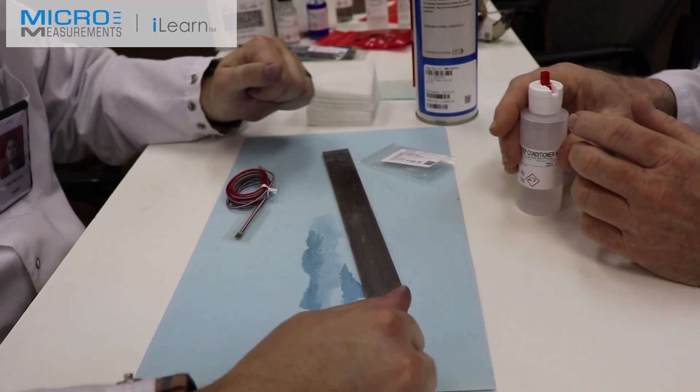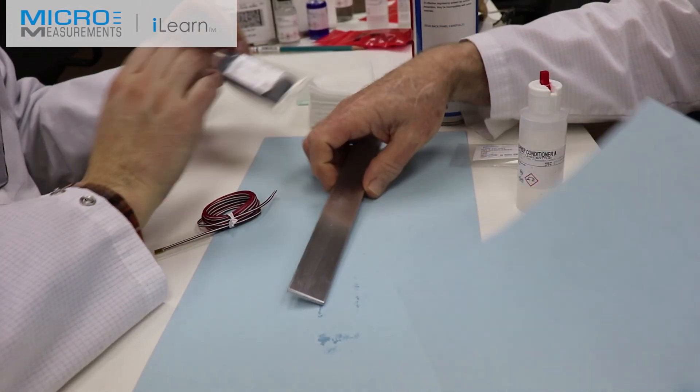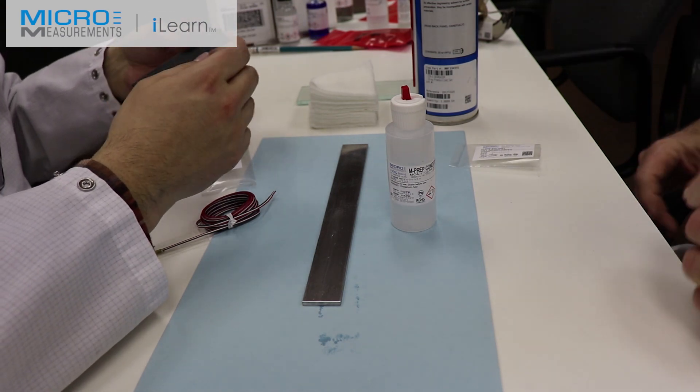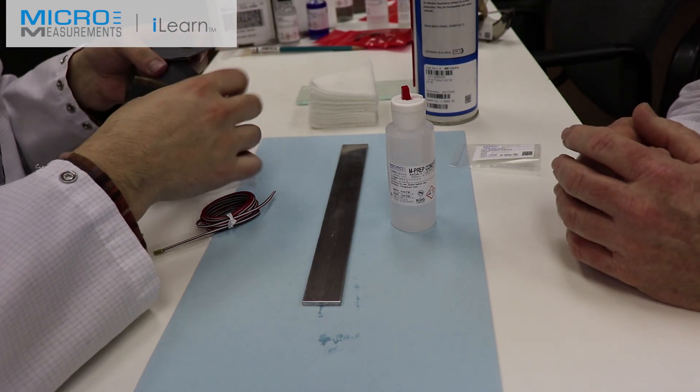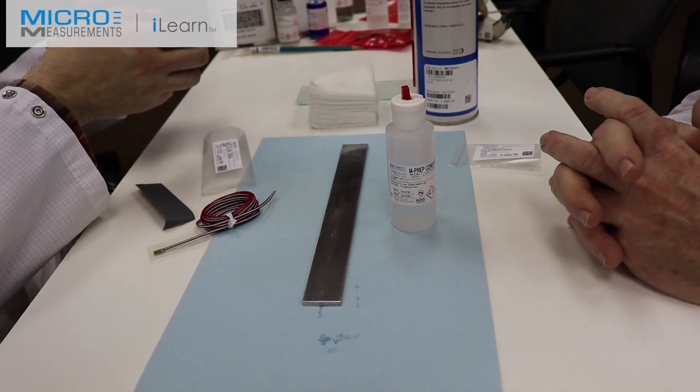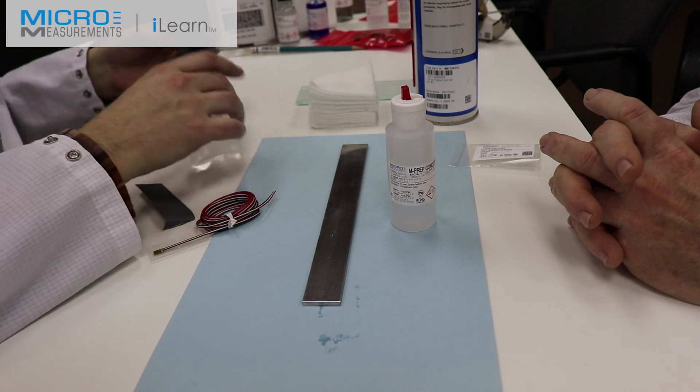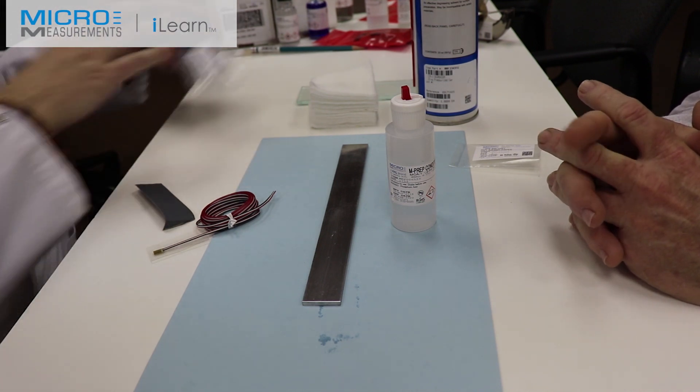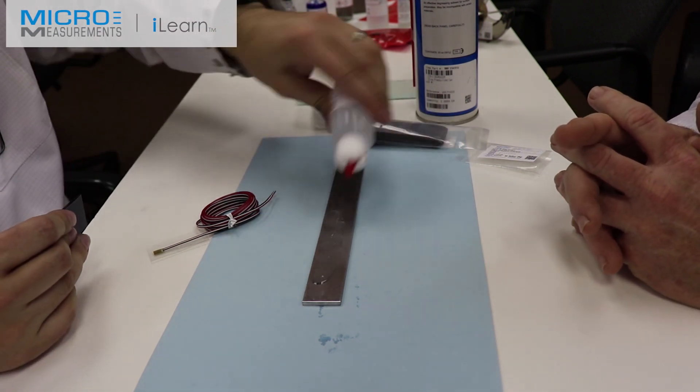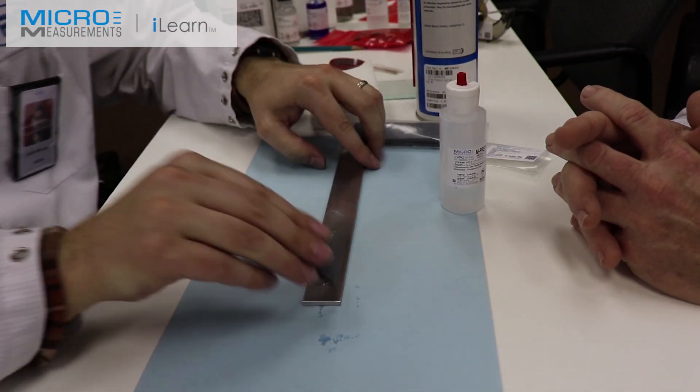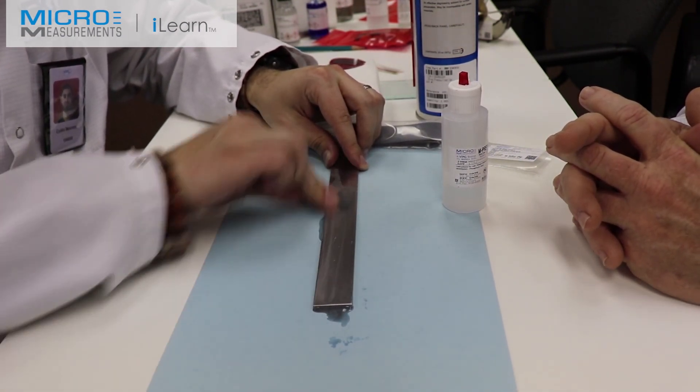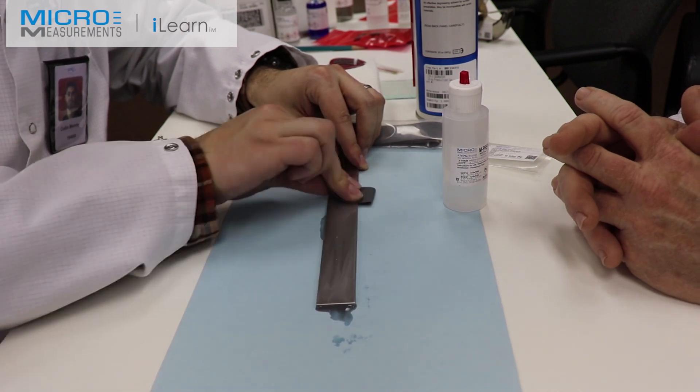Next step will be to take the Conditioner A and the 400 grit silicon carbide abrasive paper. We're getting to that surface finish of normally about 60 RMS for an aluminum beam and general purpose stress analysis work. So with the 400 grit, the SCP-3 paper, he's going to flood the surface with the Conditioner A, and then wet-abrade 10 or 12 strokes to get a nice uniform nominally 60 to 120 RMS surface finish.